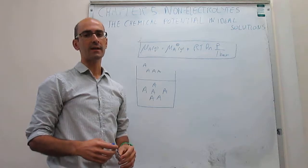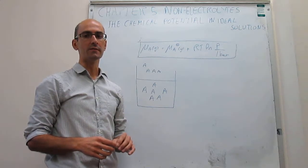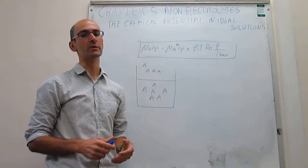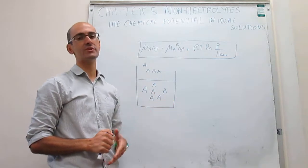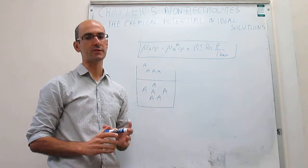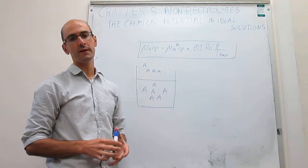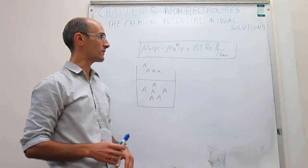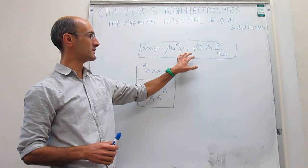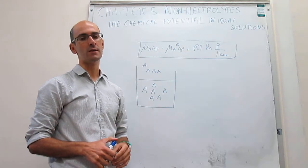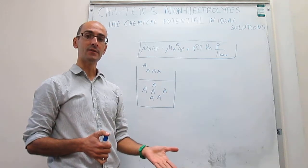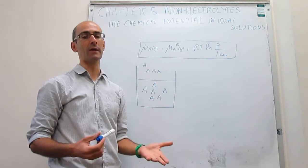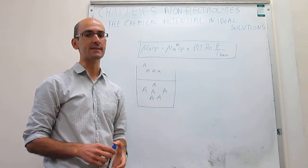This video explains how to set up the calculation of how the chemical potential of a solvent or a solute in a liquid mixture changes with concentration. What we studied in a prior video is how the chemical potential of a gas changes with concentration, and we have found an expression for that. The gas phase is interesting, but the solution phase is much more interesting because that's where more chemical reactions in the life sciences take place.